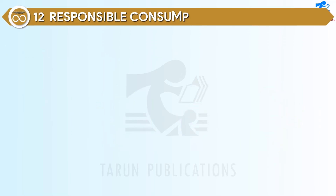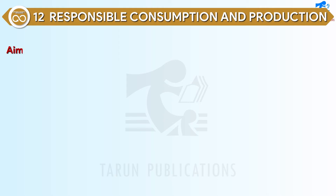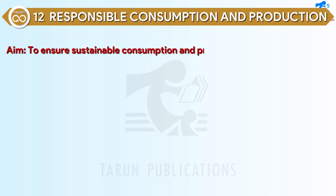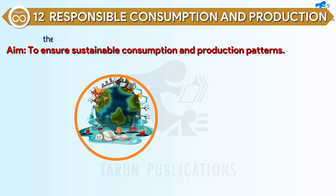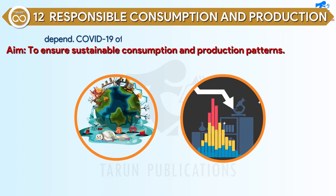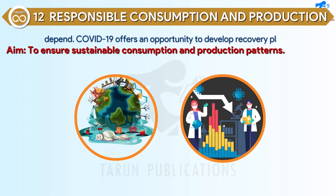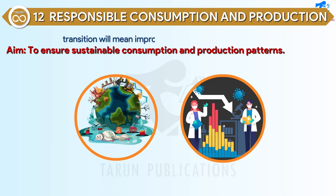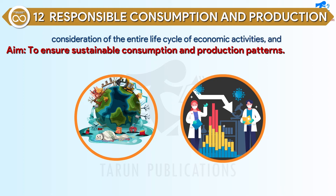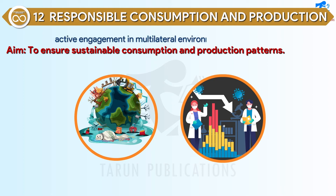SDG 12: Responsible Consumption and Production. Aim: to ensure sustainable consumption and production patterns. Economic and social progress over the last century has been accompanied by environmental degradation that is endangering the very systems on which our future development and very survival depend. COVID-19 offers an opportunity to develop recovery plans that will reverse current trends and shift our consumption and production patterns to a more sustainable course. A successful transition will mean improvements in resource efficiency, consideration of the entire life cycle of economic activities, and active engagement in multilateral environmental agreements.